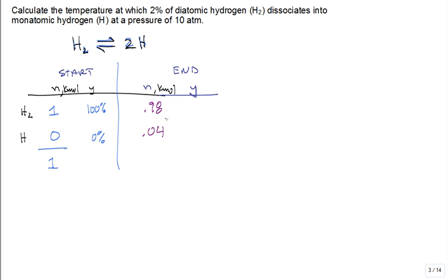If it would have been 3% dissociation, how would those numbers change? It would be 0.97 for the amount of H₂ and 0.06 for the amount of H at the final state. This is why that coefficient is so important.